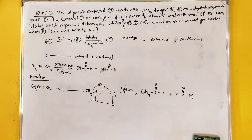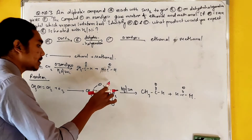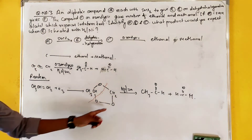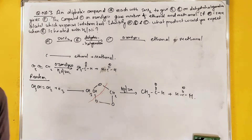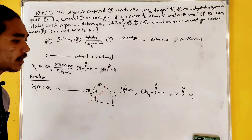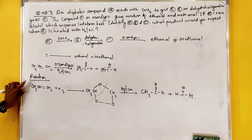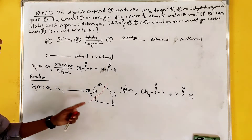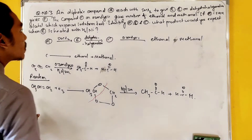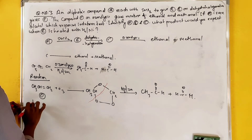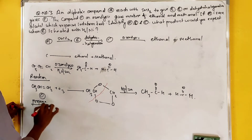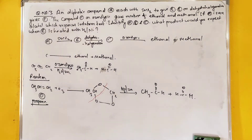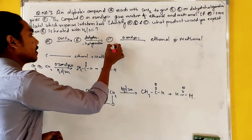We can break the compound and get the formation of our products. So we now know the compound C is propene.